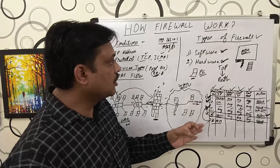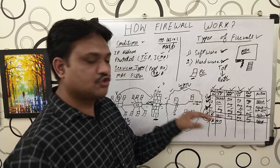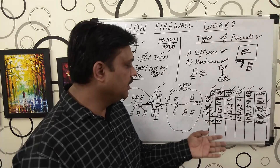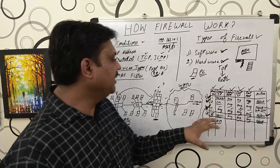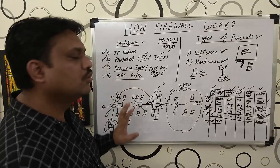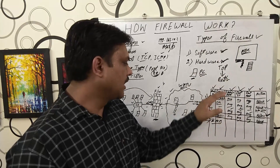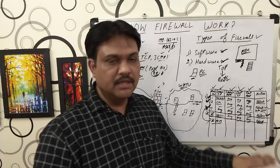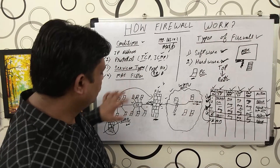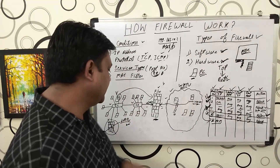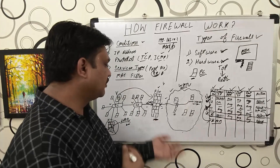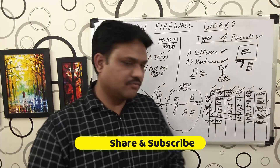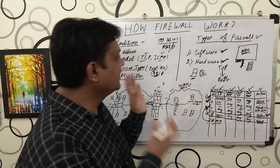This is how the firewall works and how you should configure it. The conditions should always follow top-to-bottom order, and the permit statement must always be at the end. Only then will your above conditions effectively secure your local area network and control traffic between the private network and the wide area network.